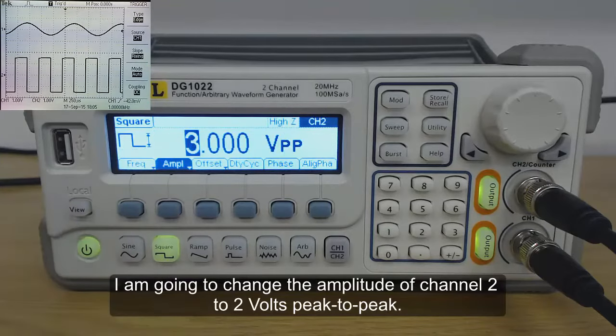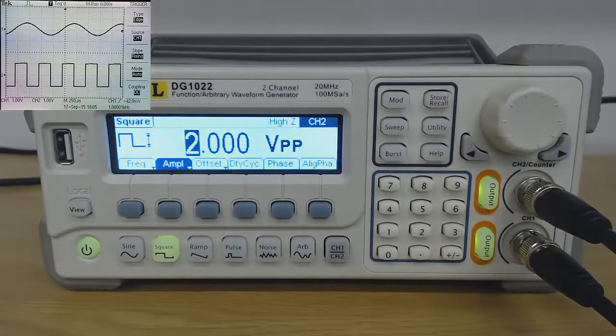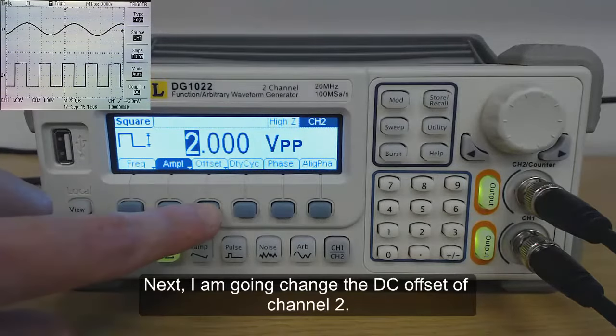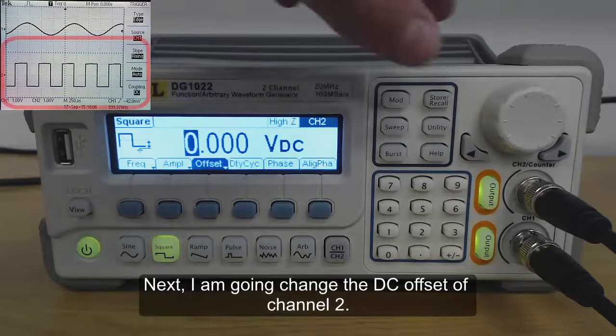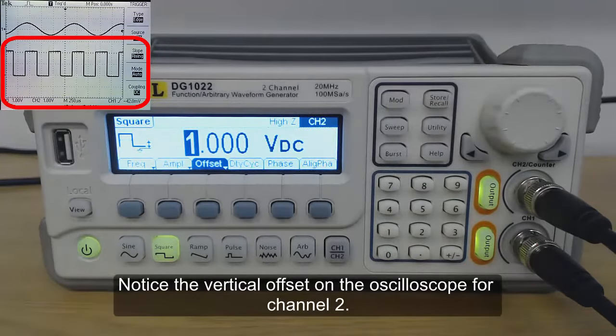I'm going to change the amplitude of channel 2 to 2V peak to peak. Next, I'm going to change the DC offset of channel 2. Notice the vertical offset on the oscilloscope for channel 2.